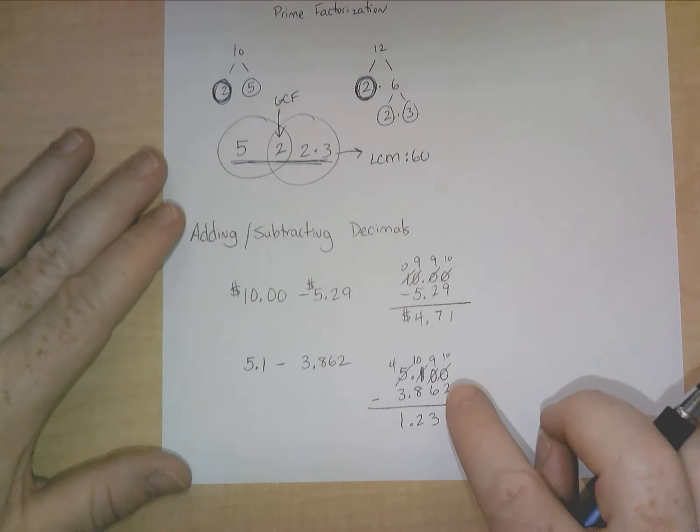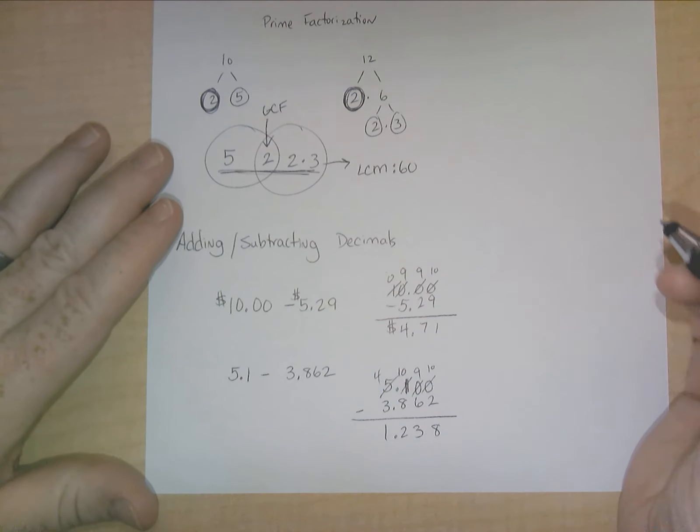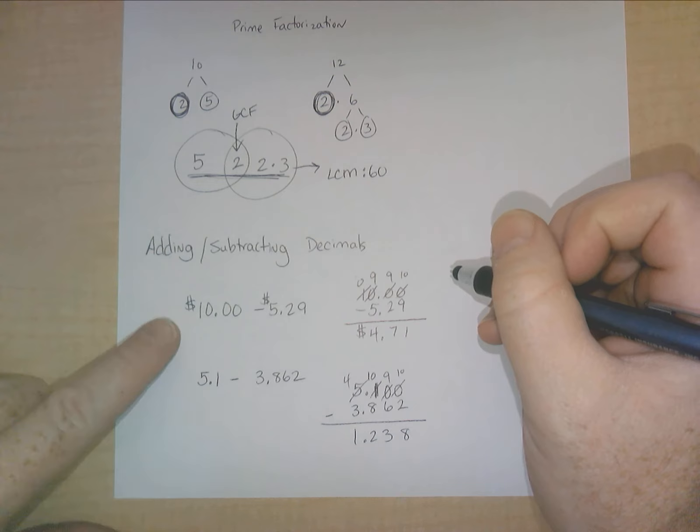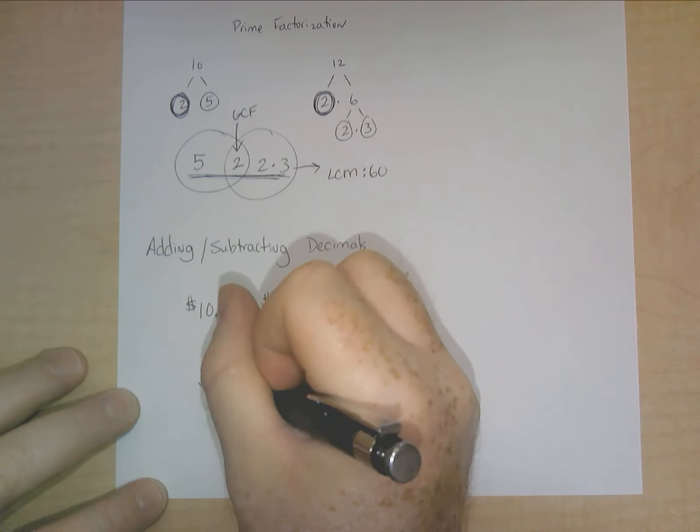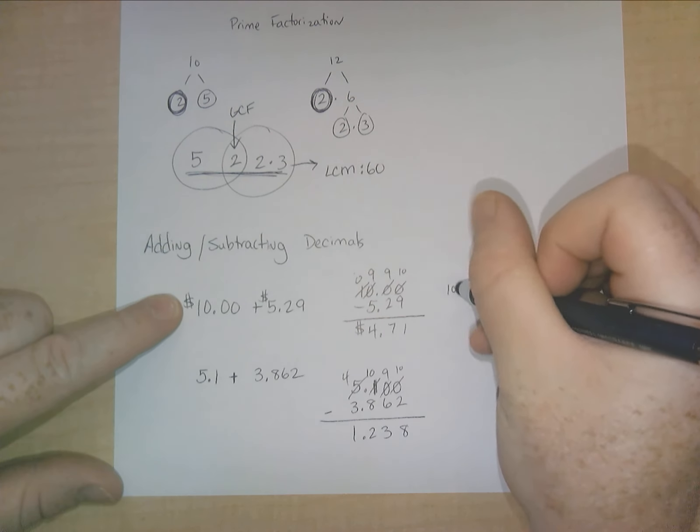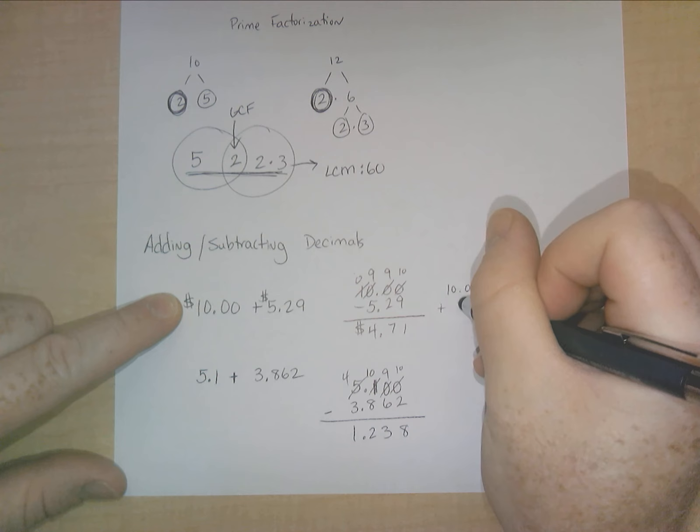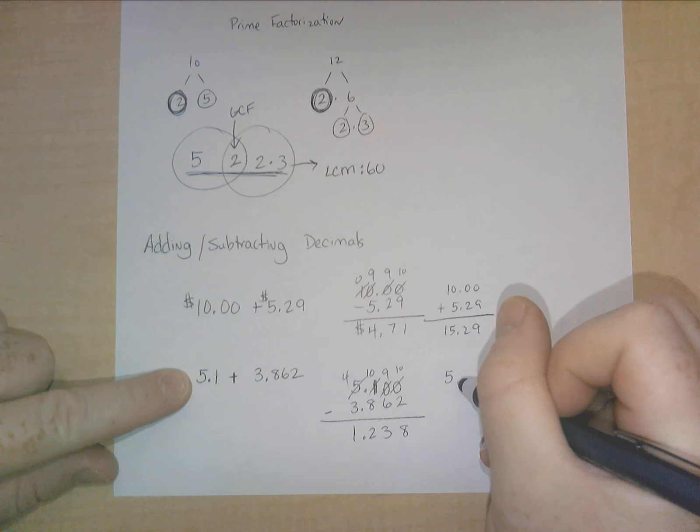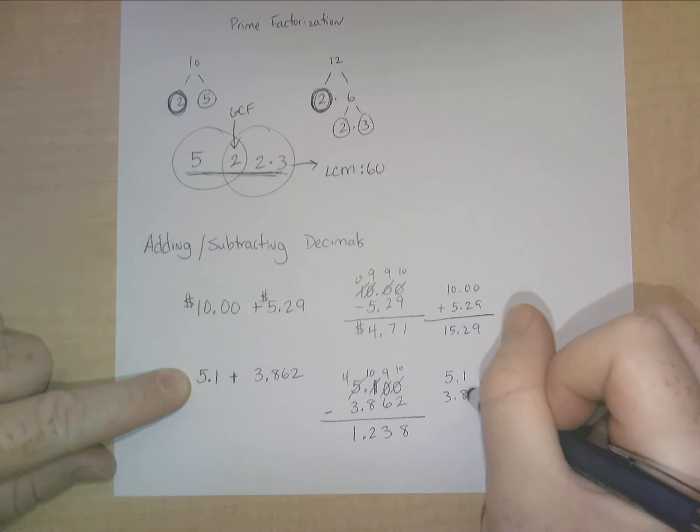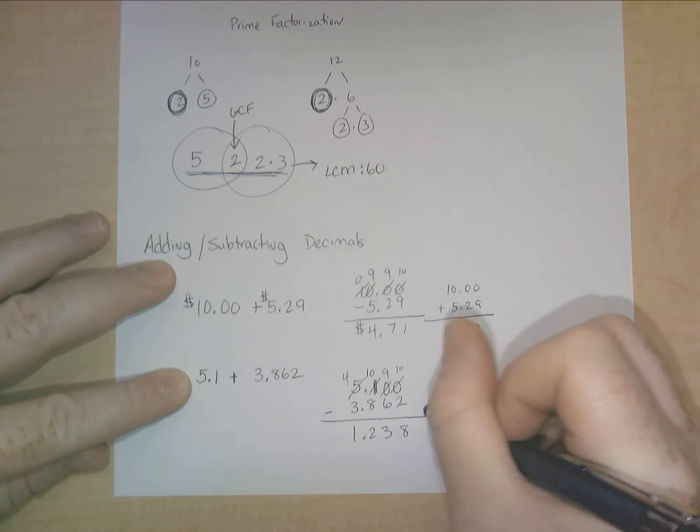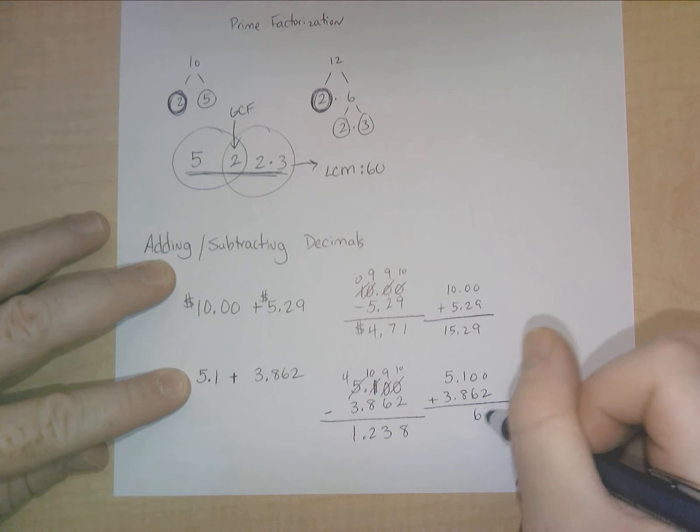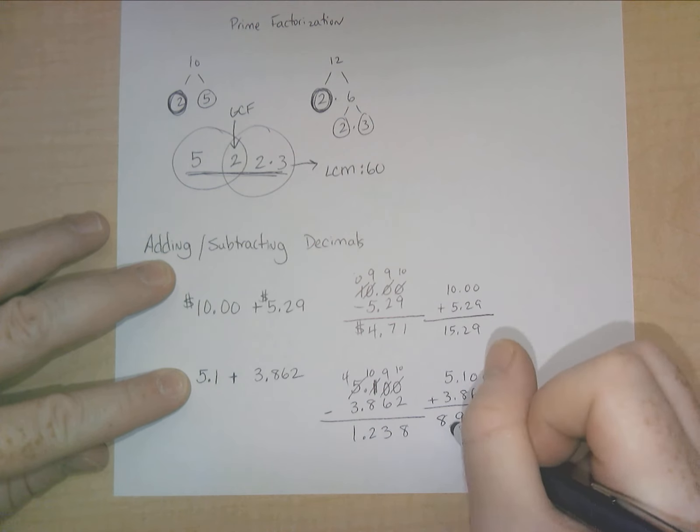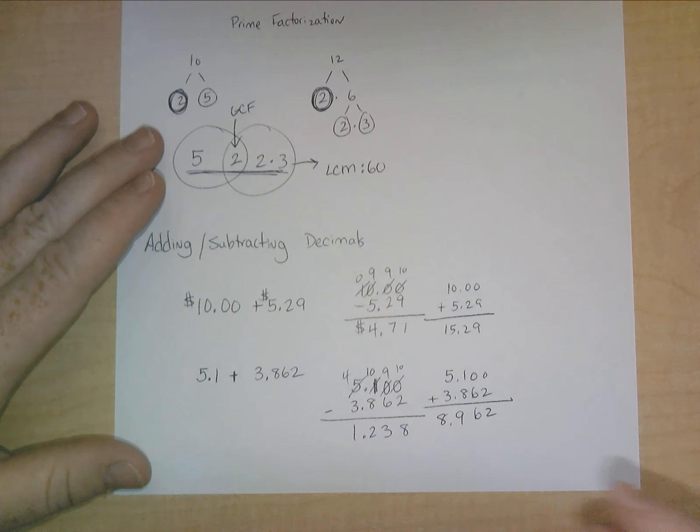Now, that's just adding and subtracting. Adding, same thing. If I were to, let's say, instead of subtracting them, I decided to add them, you're going to do the same thing. You're going to line up the decimals and solve. Same thing. 5.1, 3.862. If I decided to add them instead, I would get that.